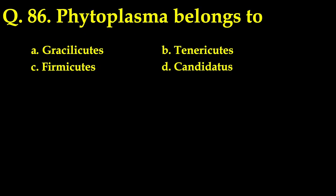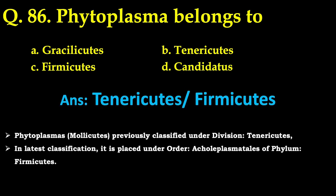The next question: Phytoplasma belongs to — the correct answer is Tenericutes or Firmicutes. Phytoplasma, otherwise termed a mollicute, was previously classified under the division Tenericutes, whereas in the latest classification these are placed under the order Acholeplasmatales of phylum Firmicutes. Hence the answer to this question depends on which classification the examiner is following, though officially the latest classification should be followed.